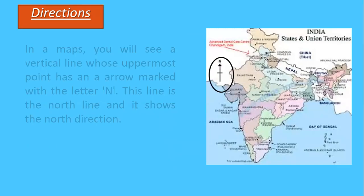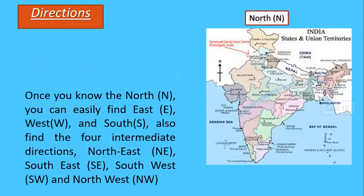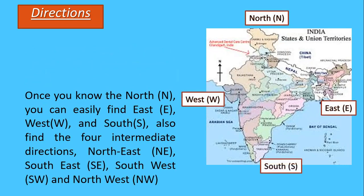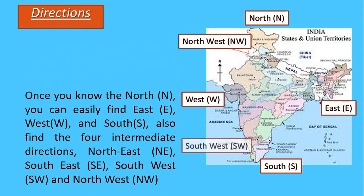Intermediate directions are the directions found in between the major directions — north, south, east, and west. Those directions found in between are called intermediate directions. With the help of this north line, you can find the north direction easily. Wherever you find the N symbol, that direction is the north part of that map — not only this map, but any map.